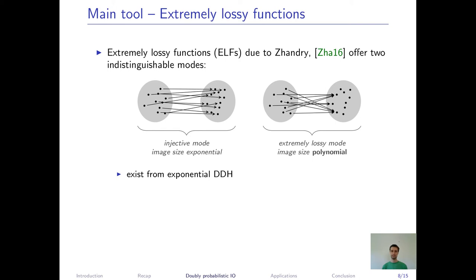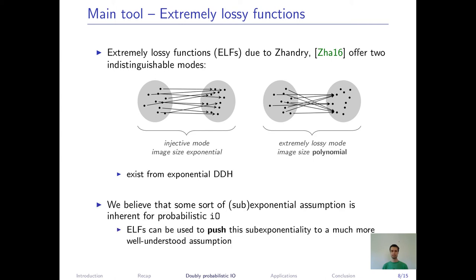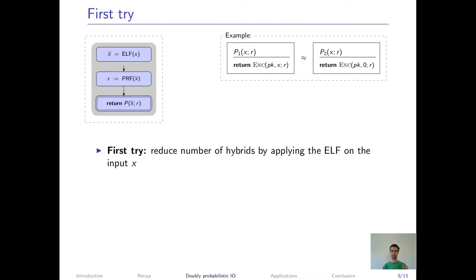By using ELFs, of course, we cannot end up with an entirely polynomial reduction. But again, we believe that some sort of sub-exponential assumption is indeed inherent for probabilistic I.O. So we can still try to push the sub-exponentiality away from I.O. to the much more well-studied DDH assumption, which is already a great accomplishment if we can do this.